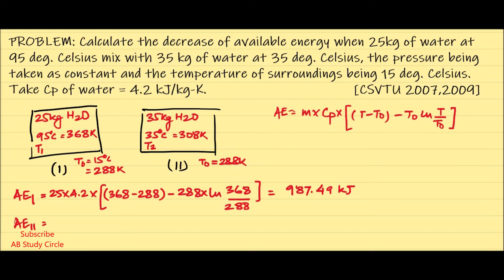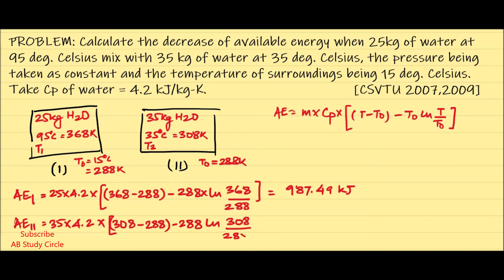For container 2: AE2 = 35 × 4.2 × [(308 − 288) − 288 × ln(308/288)], and this comes out as 97.59 kJ.